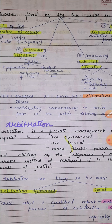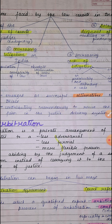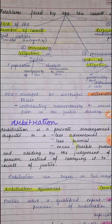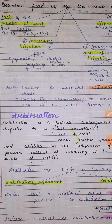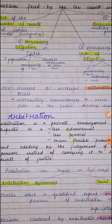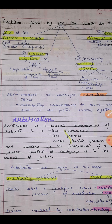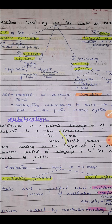ADR and all its methods are far more successful alternatives to the formalistic culture of settling disputes. Arbitration is the first major type of ADR — it is a private arrangement of settling disputes in a less adversarial, less formal, and more flexible forum. Remember arbitration as 'A-F-F': less adversarial, less formal, more flexible.